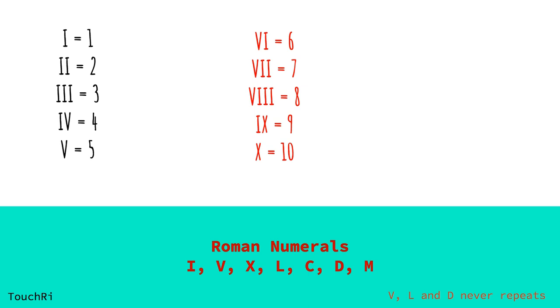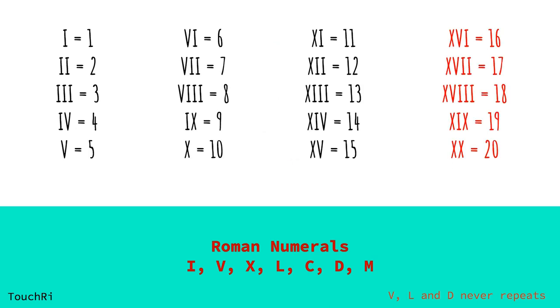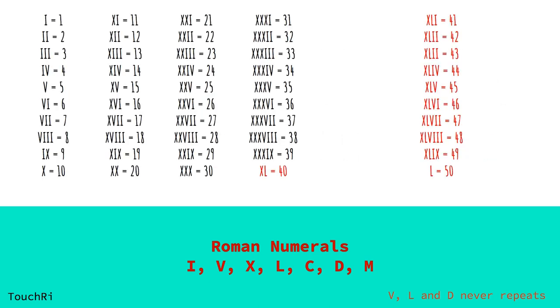For 11, it becomes XI. We are attaching I to X. And then for the rest of the numbers, we are repeating the numbers 1 through 9 with the X at the beginning. 20 is represented by two tens, X, X. Then for the rest, we attach 1 through 9 to XX. Similarly, for 30, it becomes XXX.